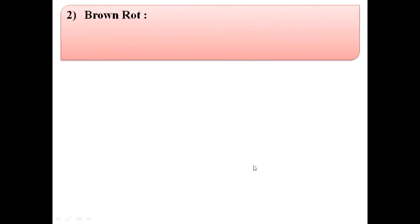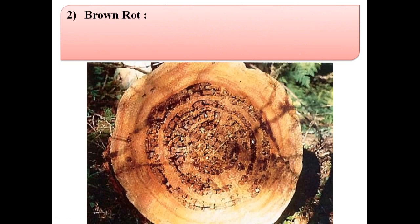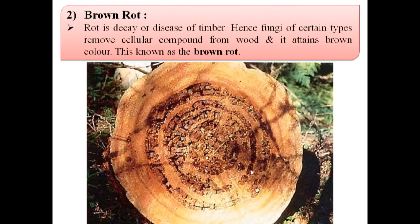Second defect due to fungi is brown rot. In this image we can see the brown rot. Rot means decay or disease of timber. Therefore, fungi of certain types remove cellular compound from this wood and it attains a brown color. This is known as brown rot.